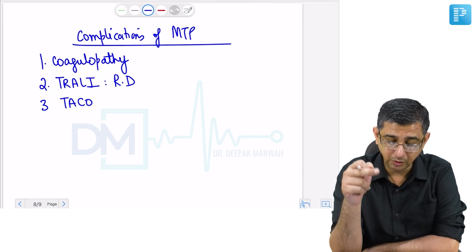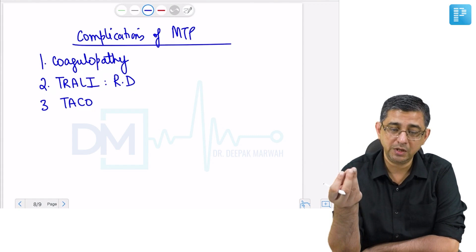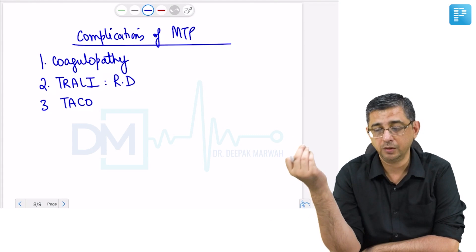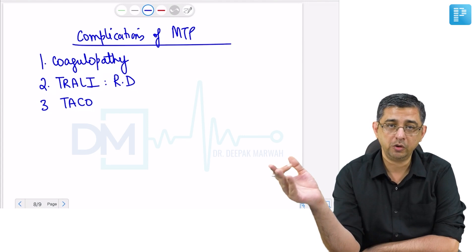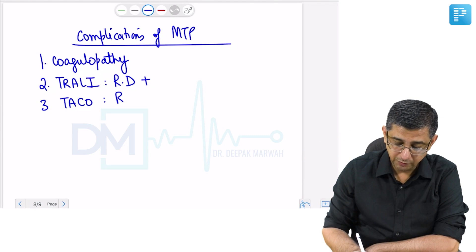You have already addressed that. If the person is having respiratory distress, then the answer is Transfusion Related Acute Lung Injury. Questions nowadays are clinically oriented. Massive transfusion protocol was initiated in a patient with postpartum hemorrhage and the person developed respiratory distress. What could be the reason or etiology?